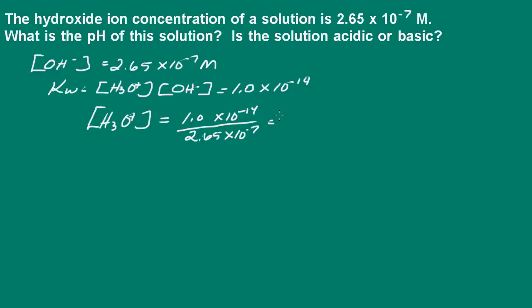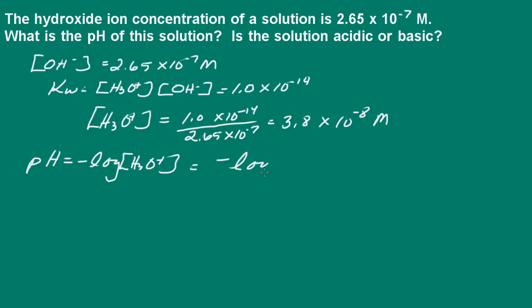That gives me 3.8 times 10 to the negative 8 molar for the hydronium ion concentration. They want to know what is the pH of the solution. Remember, the pH is equal to the negative log of the hydronium ion concentration. So we'll put this in: the negative log of 3.8 times 10 to the negative 8 molar. Our pH is equal to 7.42.